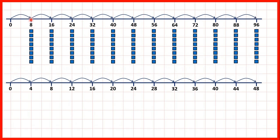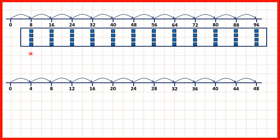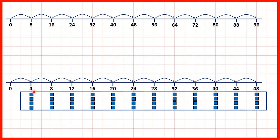On this top number line we have our 8 times table, with the counters shown below. But if we split these counters in 2 and take away half of them, you can see that what we have left gives us our 4 times table. That's why if we halve what's in the 8 times table, we get what's in the 4 times table. So half of 8 is 4, half of 16 is 8, half of 24 is 12, and so on.